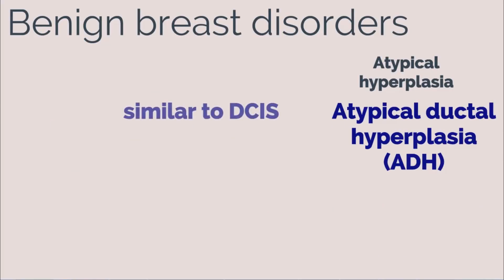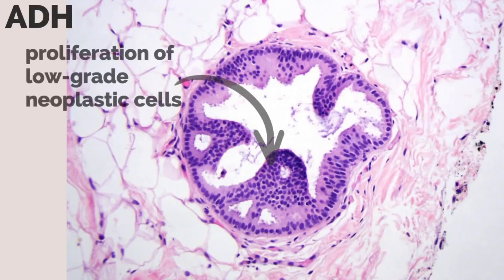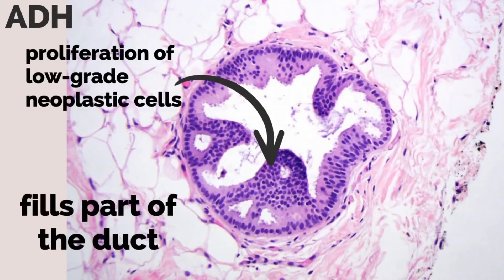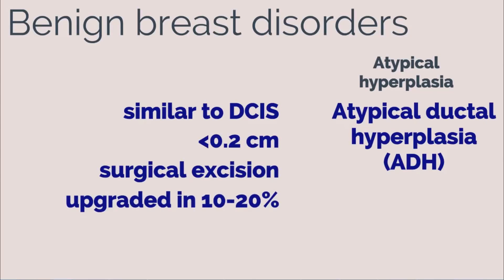ADH is similar to low-grade DCIS but is a less extensive lesion, measuring less than 0.2 cm. It is the proliferation of low-grade neoplastic ductal epithelial cells filling part but not the entire involved duct. Surgical excision is generally recommended, as rates of pathology can be upgraded to more severe disease in 10 to 20% of cases.